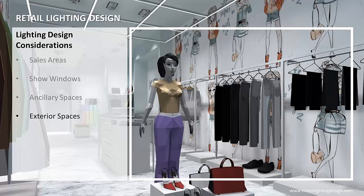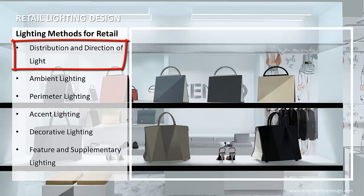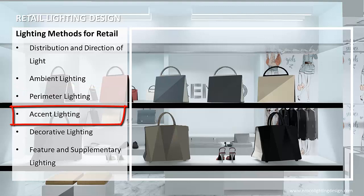The lighting system should help create an atmosphere that emphasizes the store's character and makes it a desirable place in which to shop. The lighting should permit easy, accurate examination of the features and qualities of the merchandise and minimize glare and harsh brightness differences. The lighting methods for retail are: distribution and direction of light, ambient lighting, perimeter lighting, accent lighting, decorative lighting, and feature and supplementary lighting.